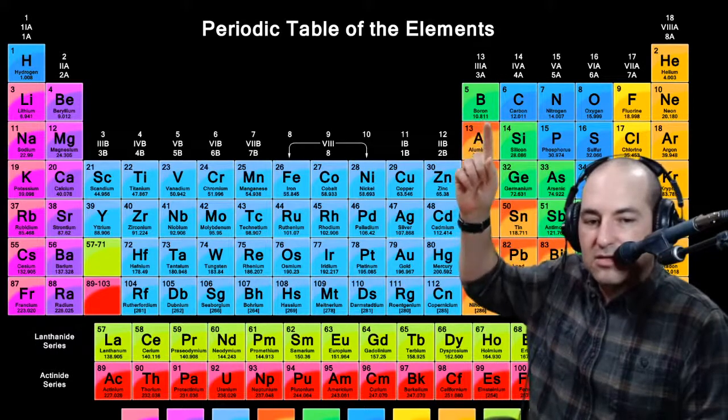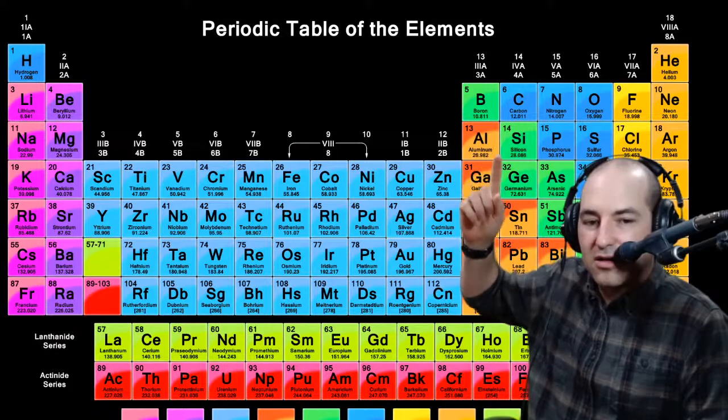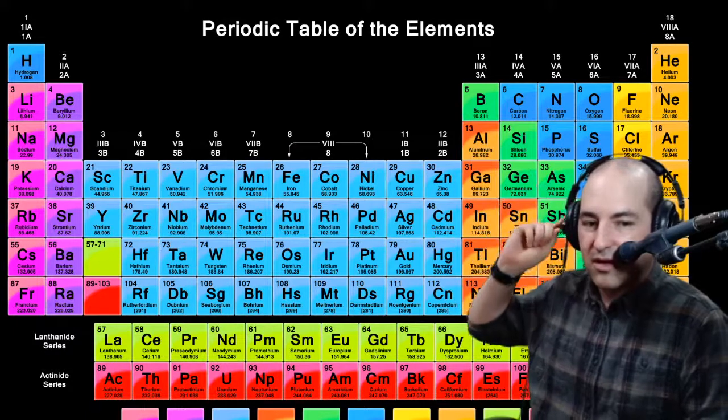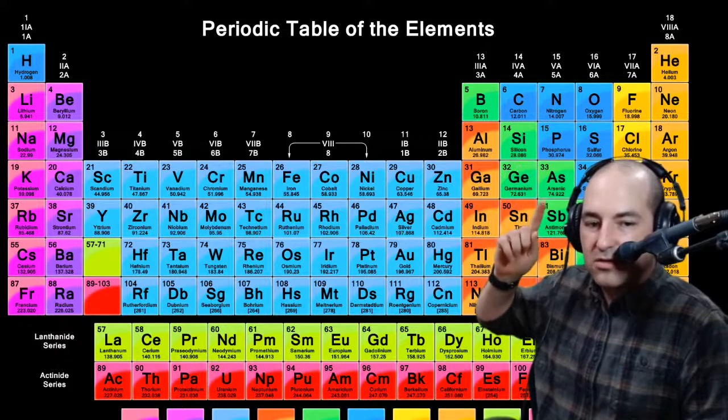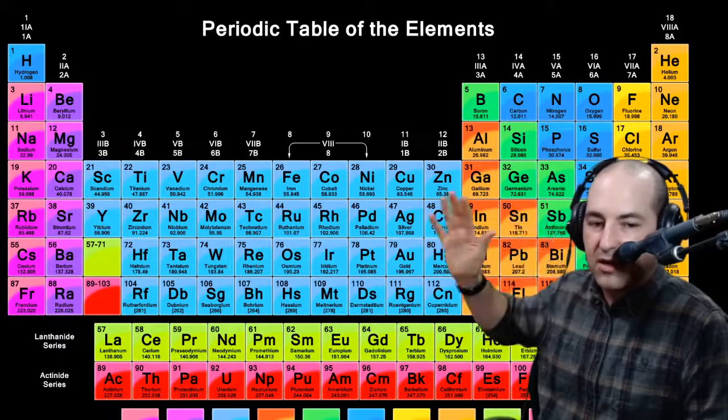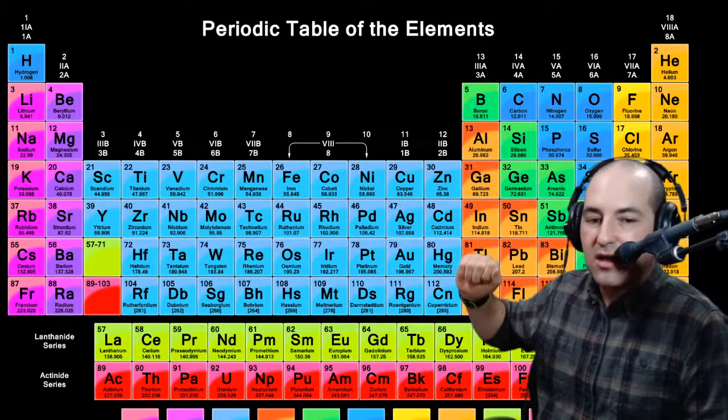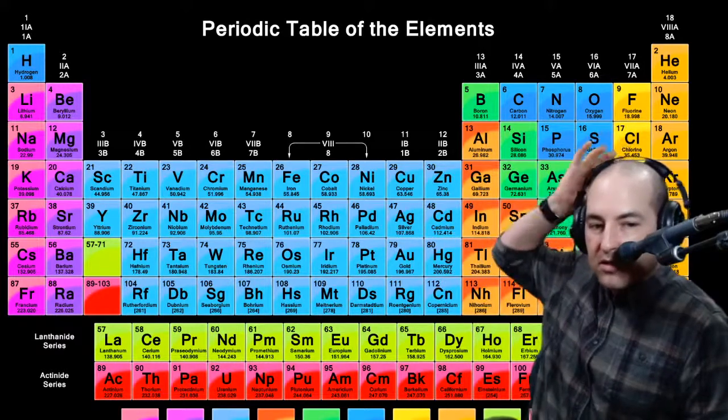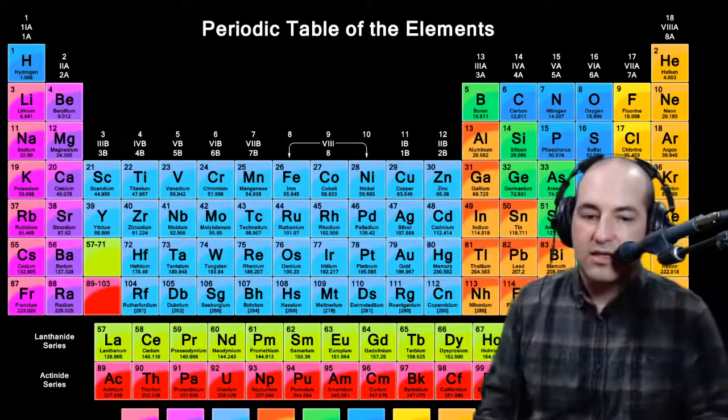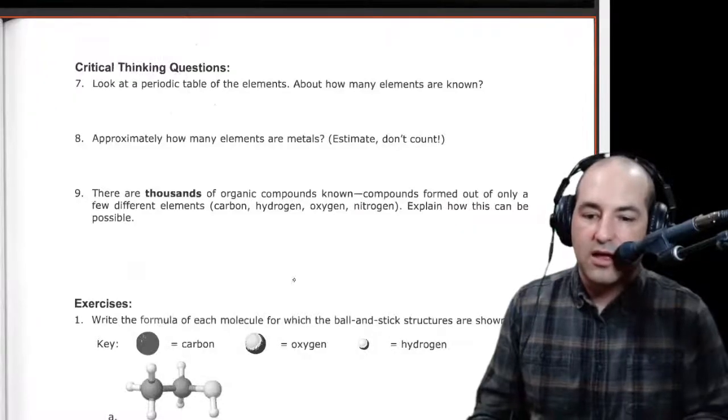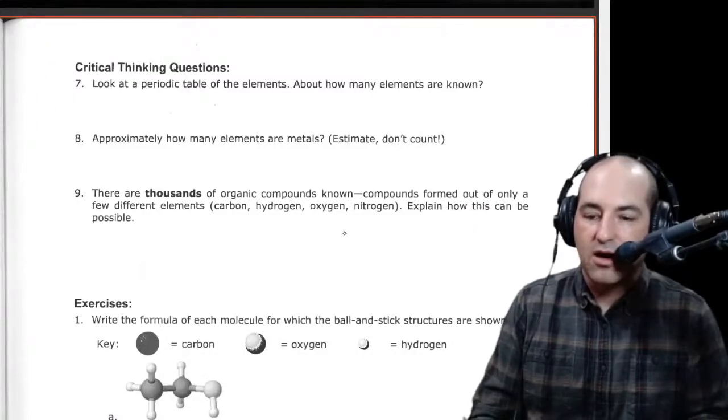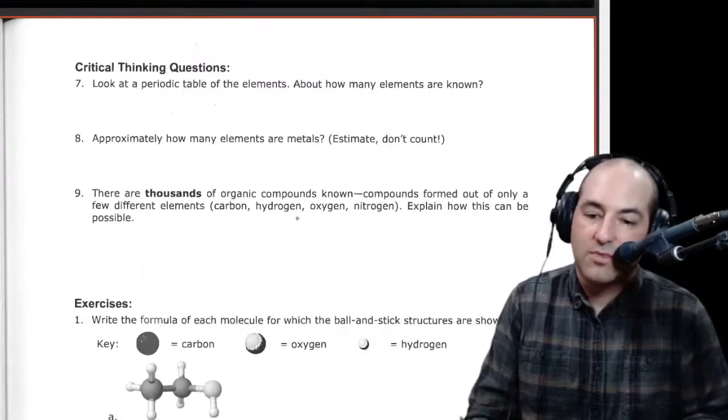And you can kind of see this green, these green elements that are, if you can't see green, I'm pointing to it. So it's here, here, here, there, and kind of going down the angle. There's a little kind of a stair-step pattern that goes down this way. And everything over to the left is a metal and everything over to the right is a non-metal. It's asking you not to count, but rather just to estimate how many metals and how many non-metals there are.